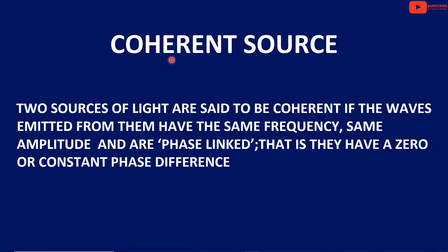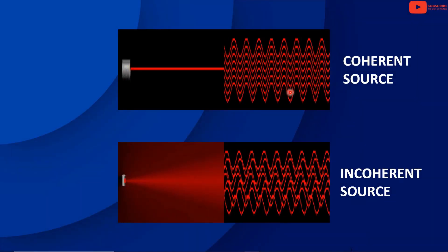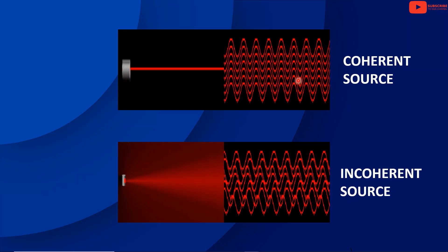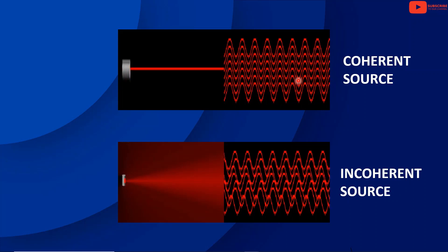Let's take a look at the coherent source. What are coherent sources? Two sources of light are said to be coherent if the waves emitted from them have the same frequency, same amplitude, and are in phase — that is, they have a zero or constant phase difference. So two coherent sources share the same amplitude, same frequency, and constant phase difference.